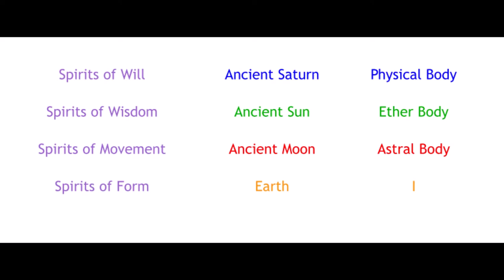That makes four great cosmic stages. They go by the names Ancient Saturn Evolution, Ancient Sun Evolution, Ancient Moon Evolution, Earth Evolution. The first three are not, of course, the same as the present celestial bodies by those names. They are actually previous incarnations of the Earth.